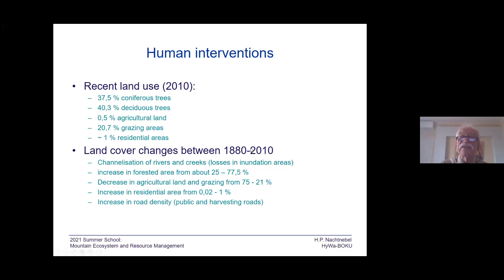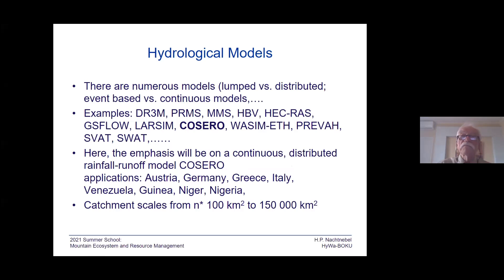You can see here the changes in land cover between 1880 and 2010. In 1880, forested area was about 25%; now it's 77%. There was also a change in the composition of forest trees. At the same time, there was a substantial decrease in agricultural land and grazing areas, from about 75% to 21%. The increase in residential areas is not that big. We used the COSERO model, which we developed some 15 years ago — it's a partly physically based model. There are also many other widely applied models that perform in a similar way.